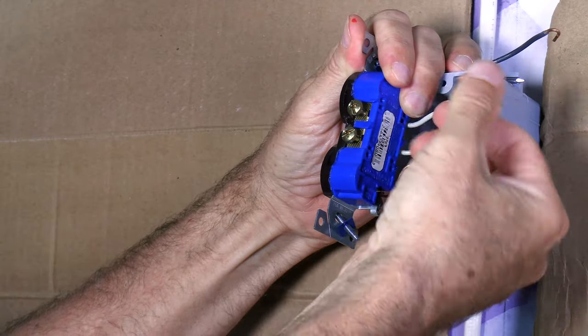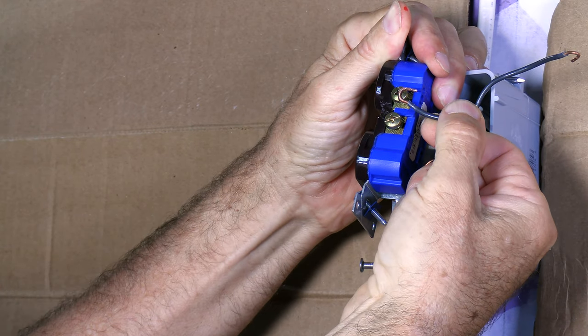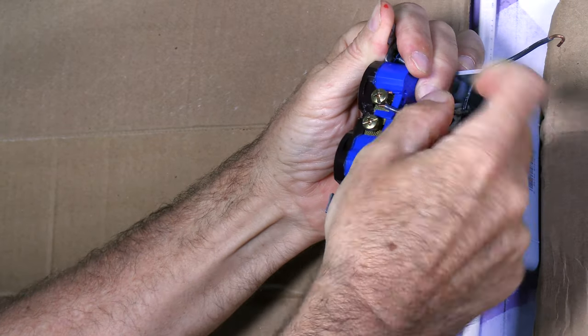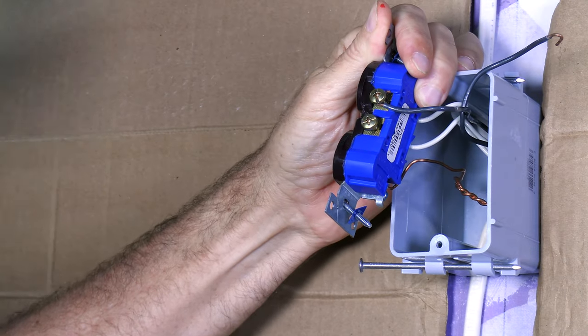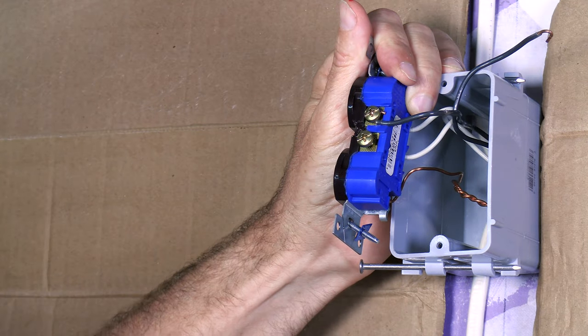Now, when you're putting these loops around this wire, put it on this way right here where the loop is going in the same direction as the screw. Okay. That way, when you tighten it up, it doesn't expand that loop and go away from the screw.